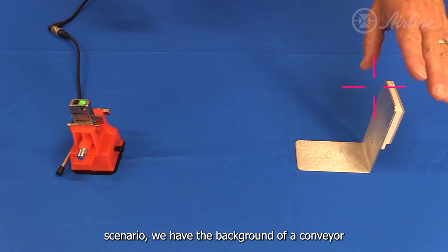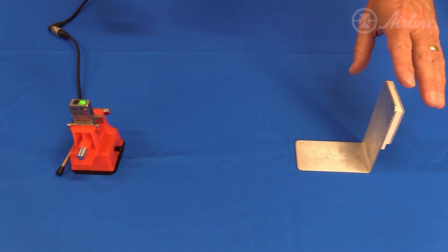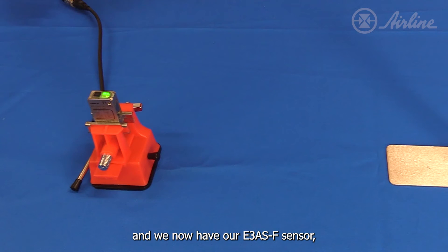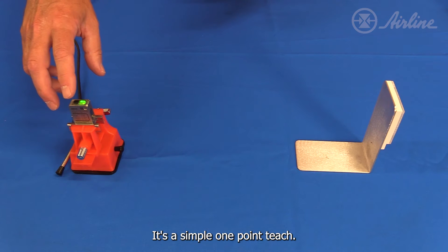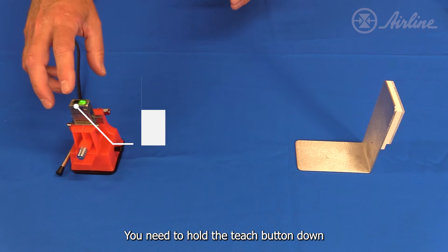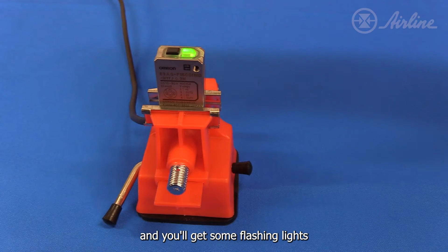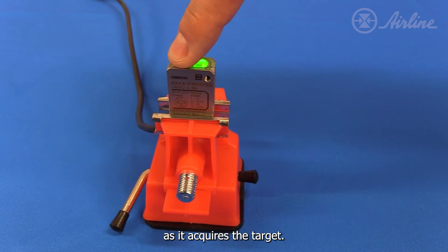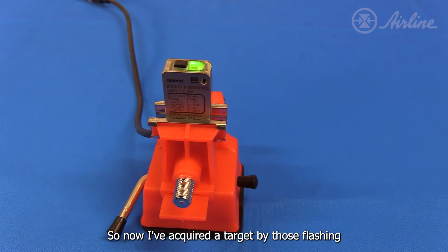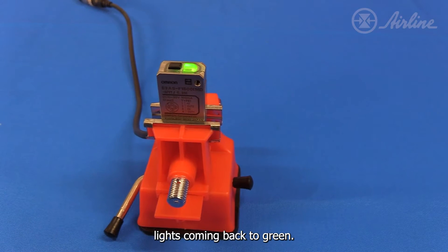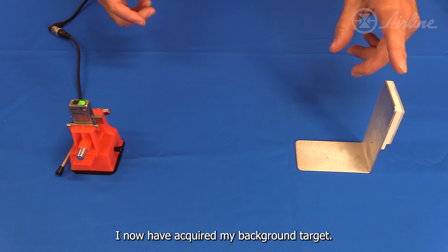So in this scenario we have the background of a conveyor and we now have our E3AS-F sensor which we've got wired up. It's a simple one-point teach - you need to hold the teach button down for more than one second but less than five, and you'll get some flashing lights as it acquires the target. So now I've acquired a target by those flashing lights coming back to green - I now have acquired my background target.